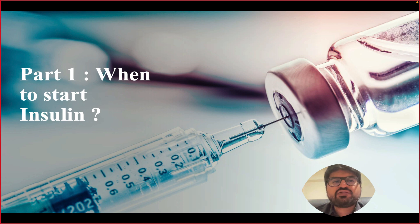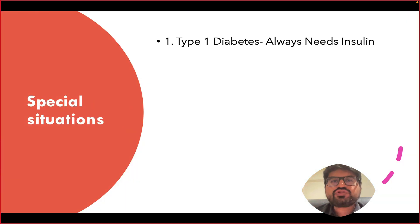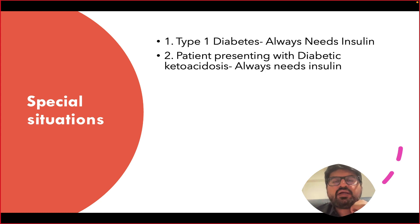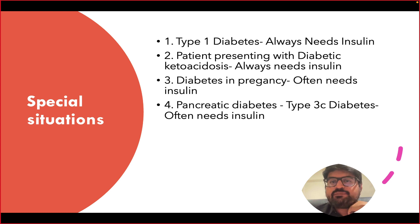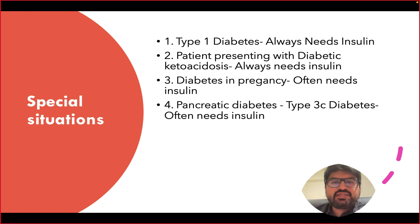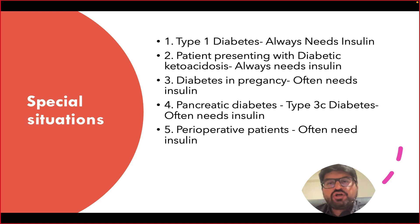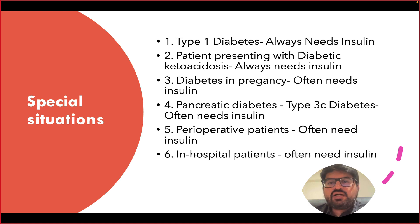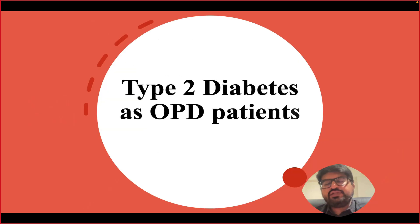When should you start insulin? A patient with type 1 diabetes needs insulin for sure. A patient presenting with diabetic ketoacidosis always needs insulin. Diabetes in pregnancy often needs insulin, as does pancreatic diabetes (type 3c). Perioperative patients and hospitalized patients also require insulin.